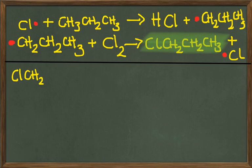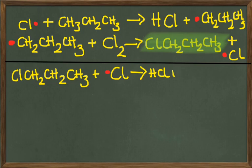This propyl radical then goes on to react with a new molecule of chlorine to make the chloropropane and chlorine radical. That chloropropane is then the reagent in the next pair of propagation steps.